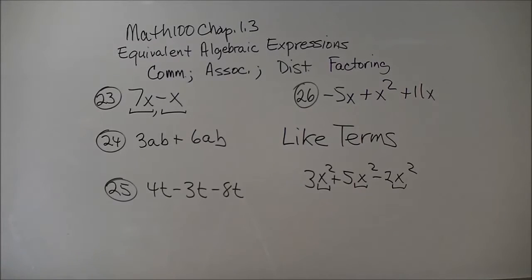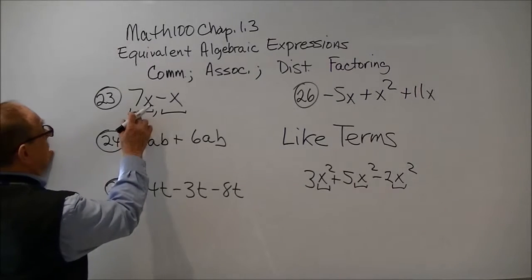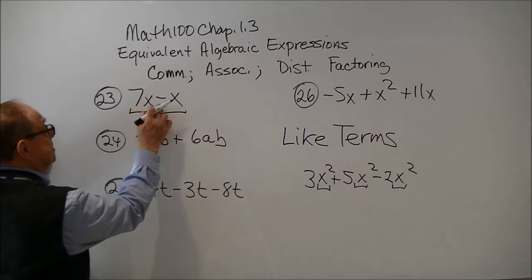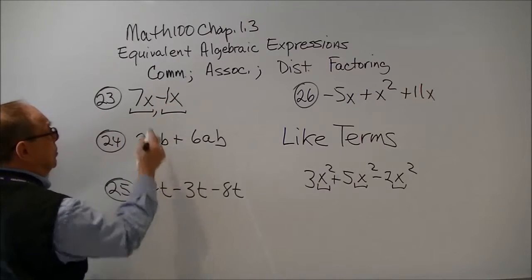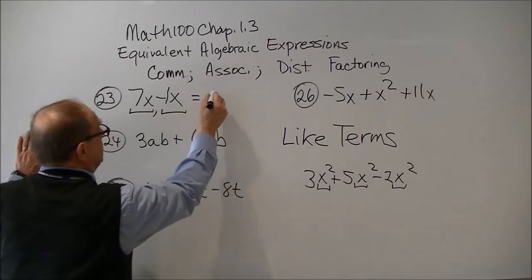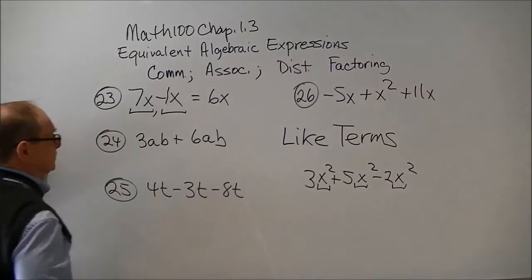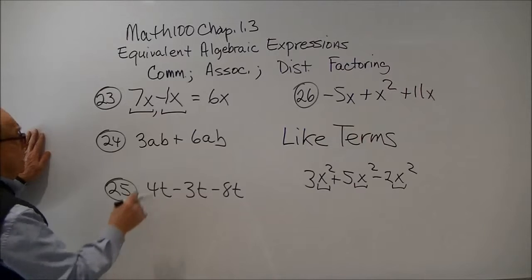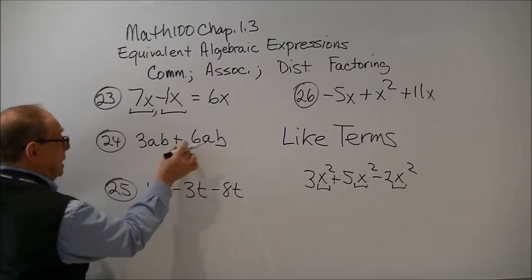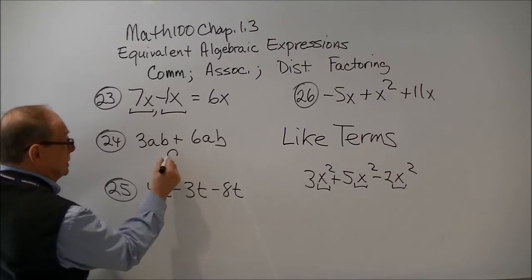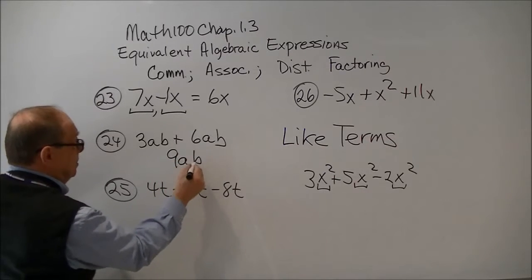So as we combine like terms here, that'll be our next little item. So here we have 7x minus, and a good idea is to put a 1 there, 1x. This is going to be a 6x. Now, here we have 3 of ab's and 6 of ab's, which will give us 9 ab's.